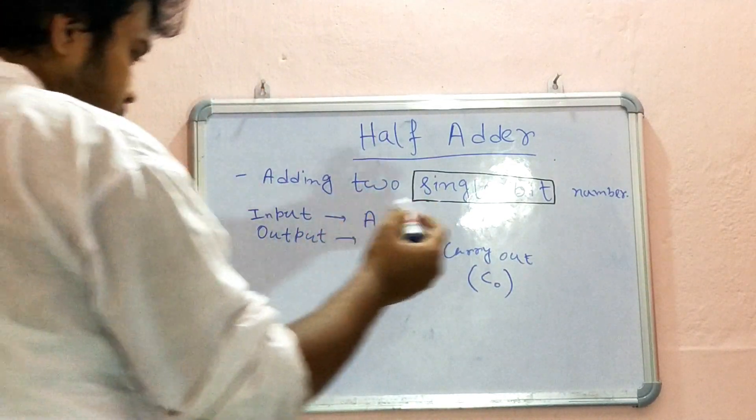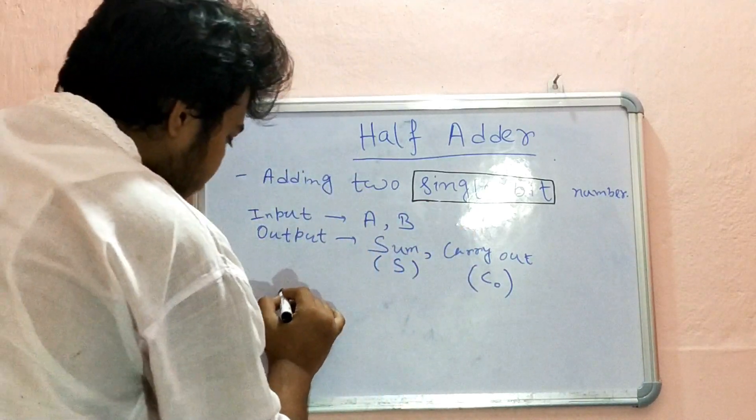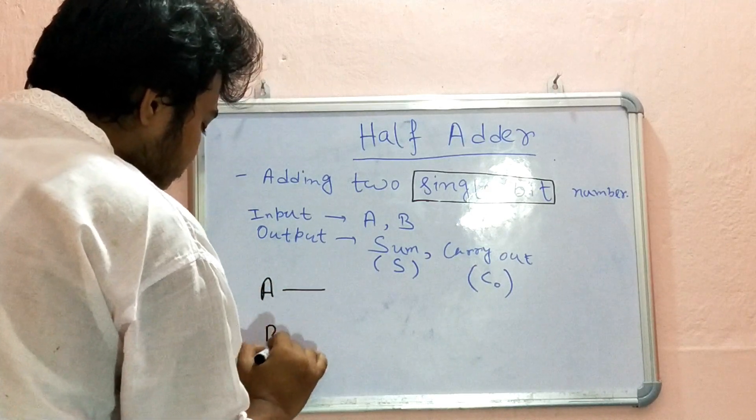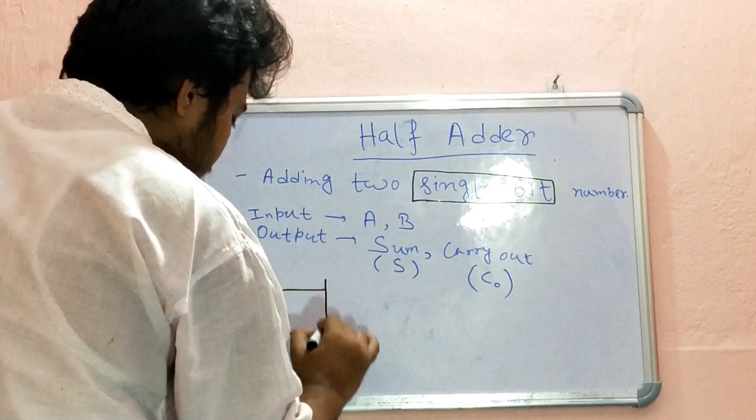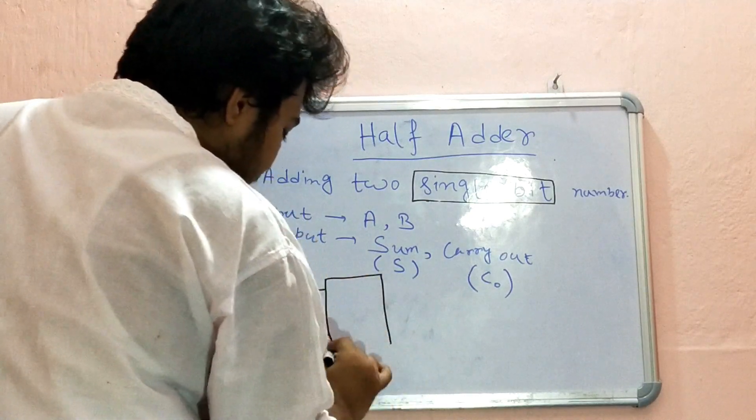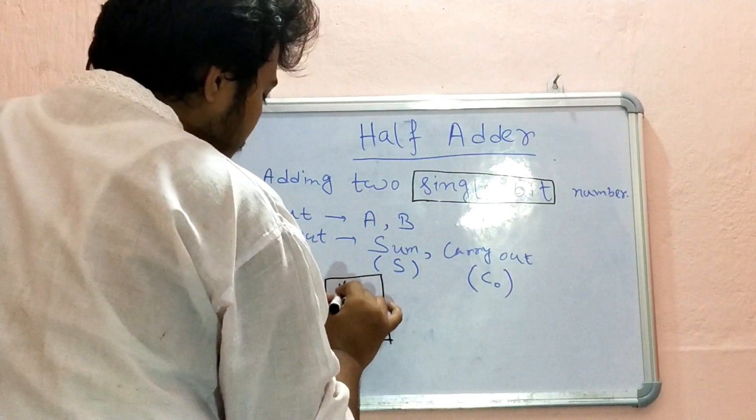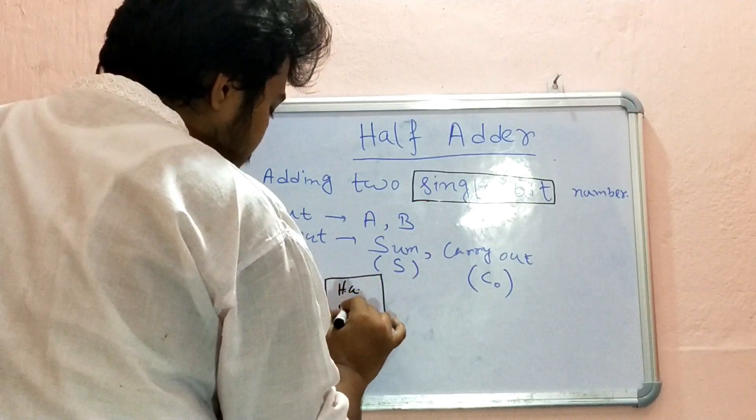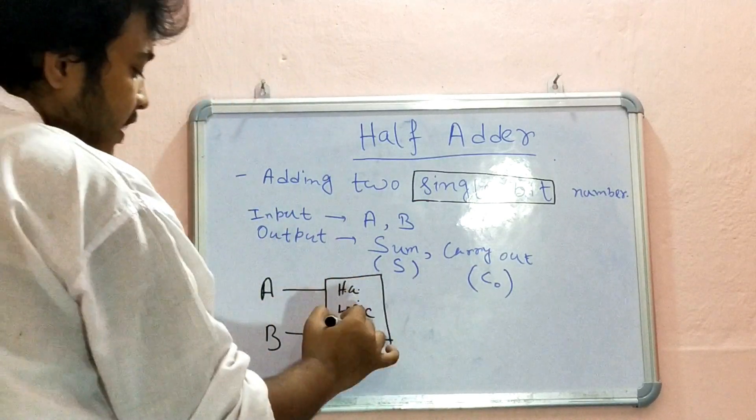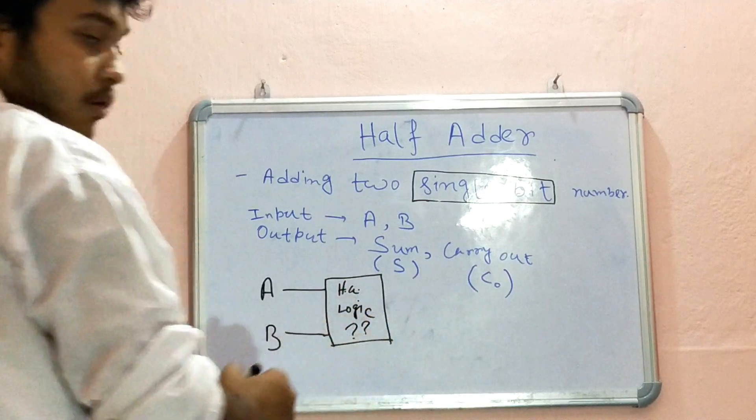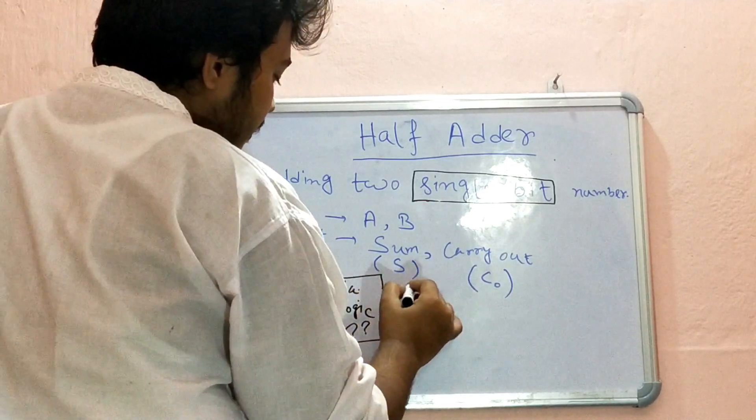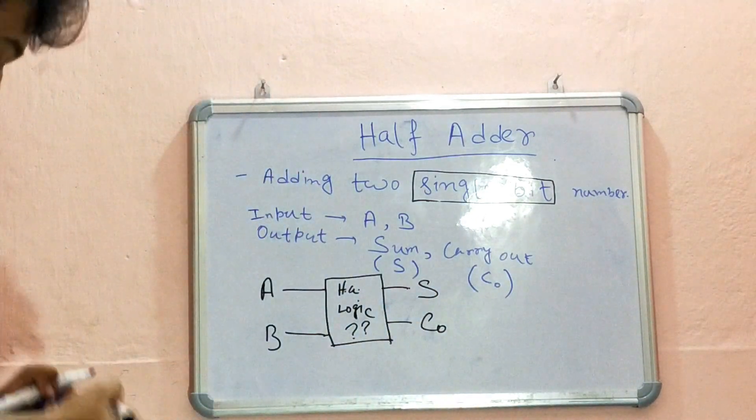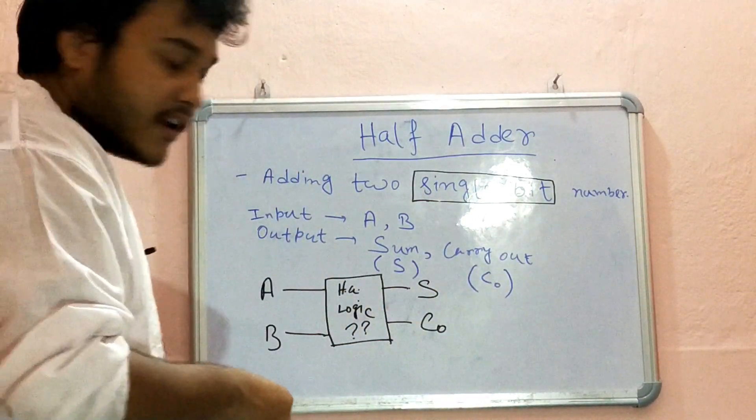Now let's see what the diagram looks like. This is a single bit input A, a single bit input B. So the half adder logic - we will find out what logic is here, and from here we'll get sum and carry out. Let's find out the logic.